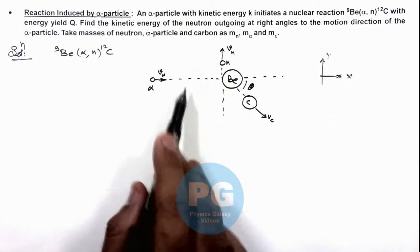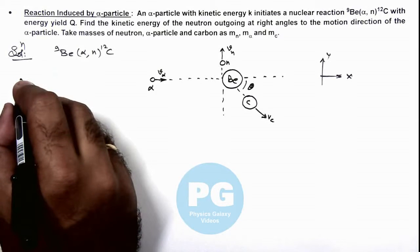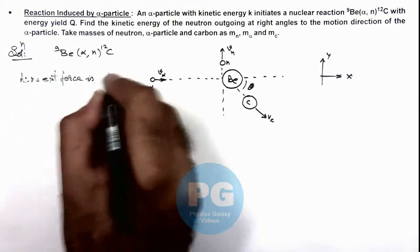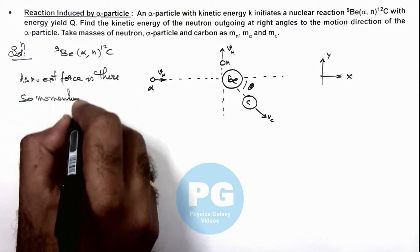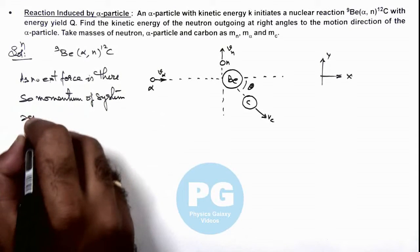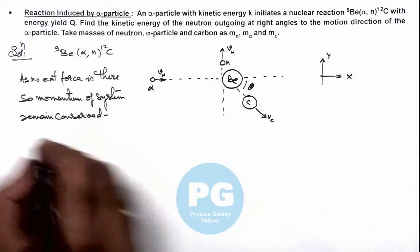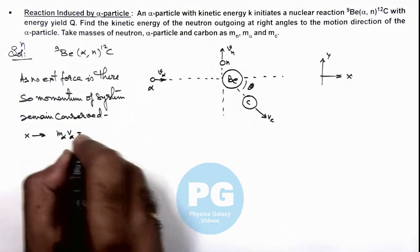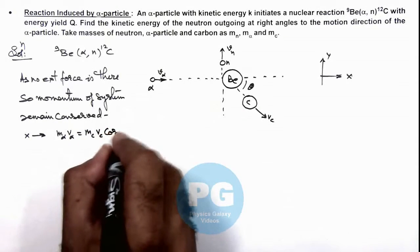Since no external force is acting on the system, the total momentum of the system will remain conserved. In the x-direction, the initial momentum was m_α·v_α, and after the reaction it is m_c·v_c·cosθ. So this is our first equation.